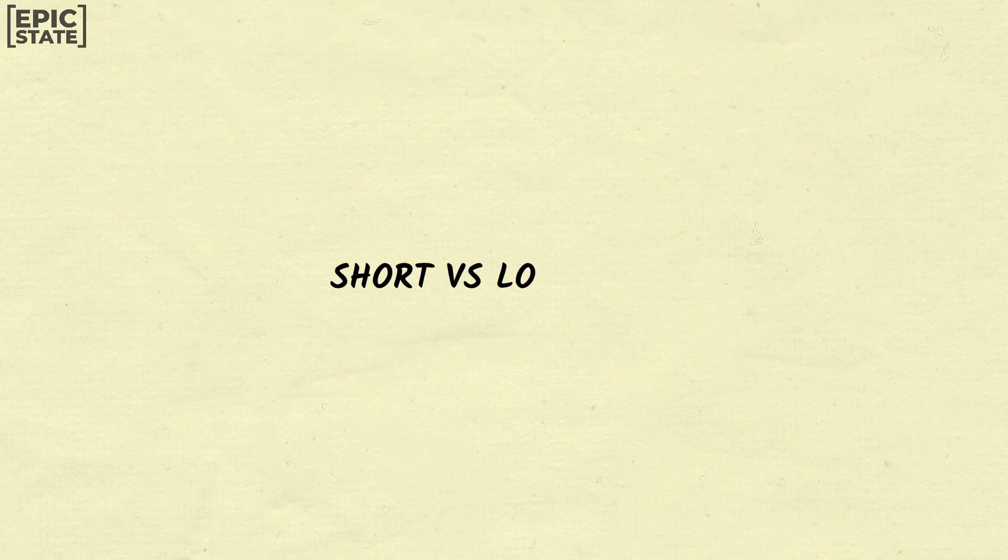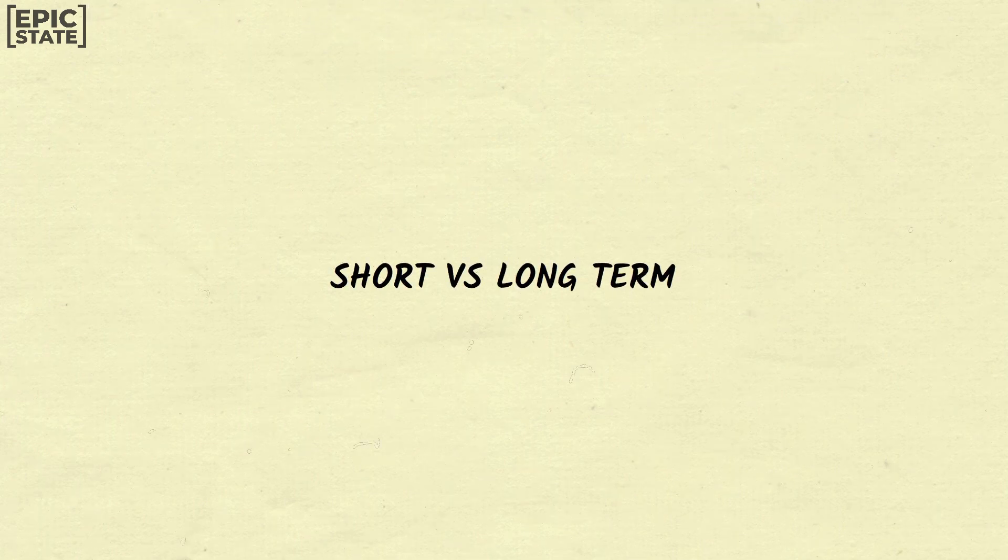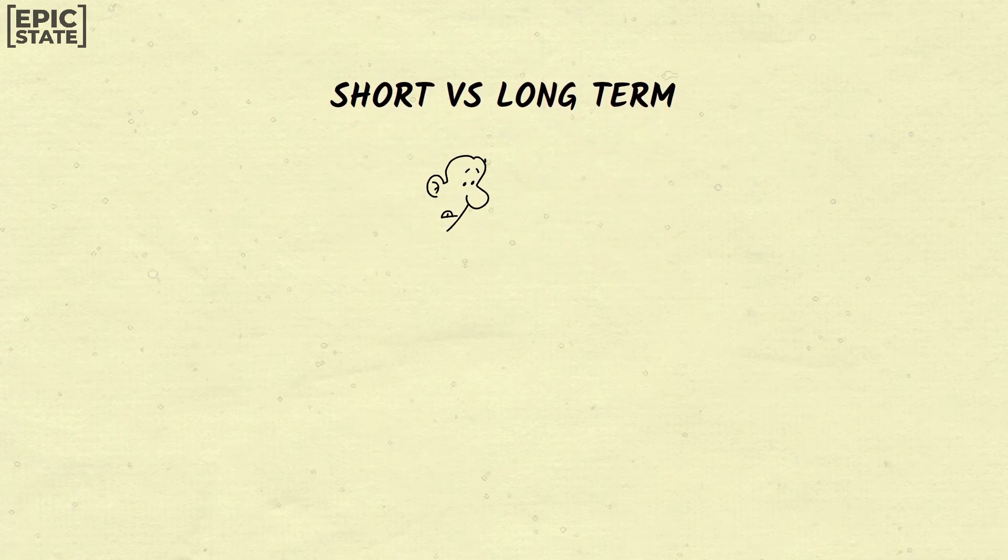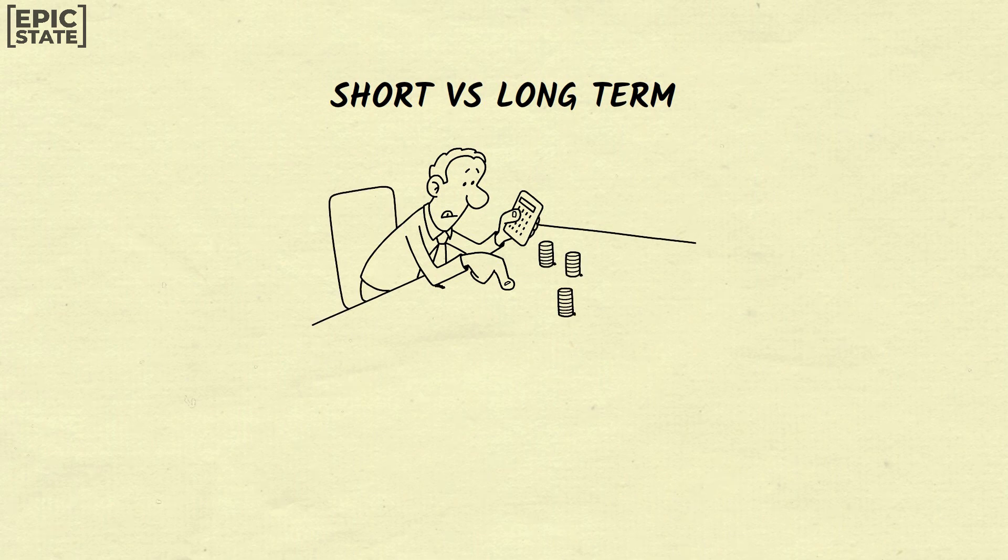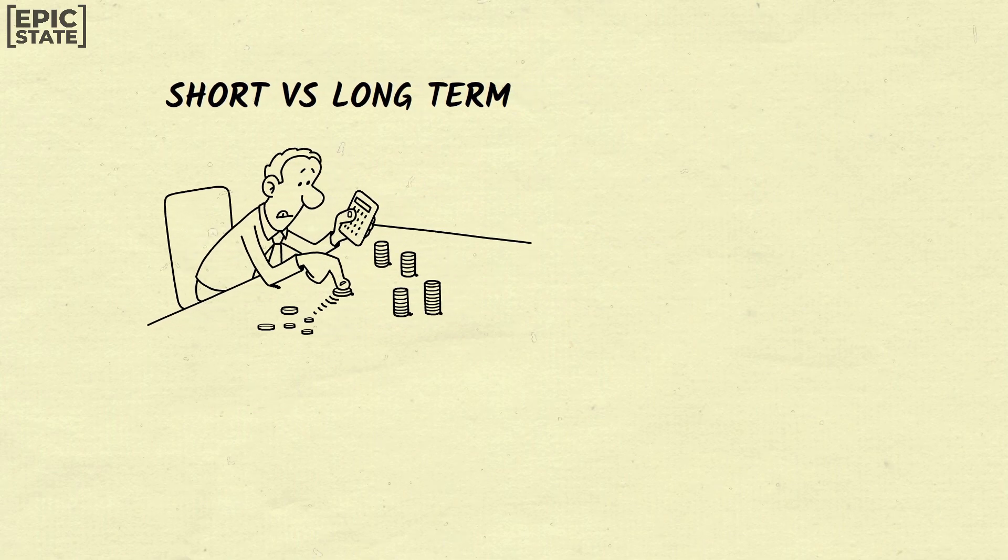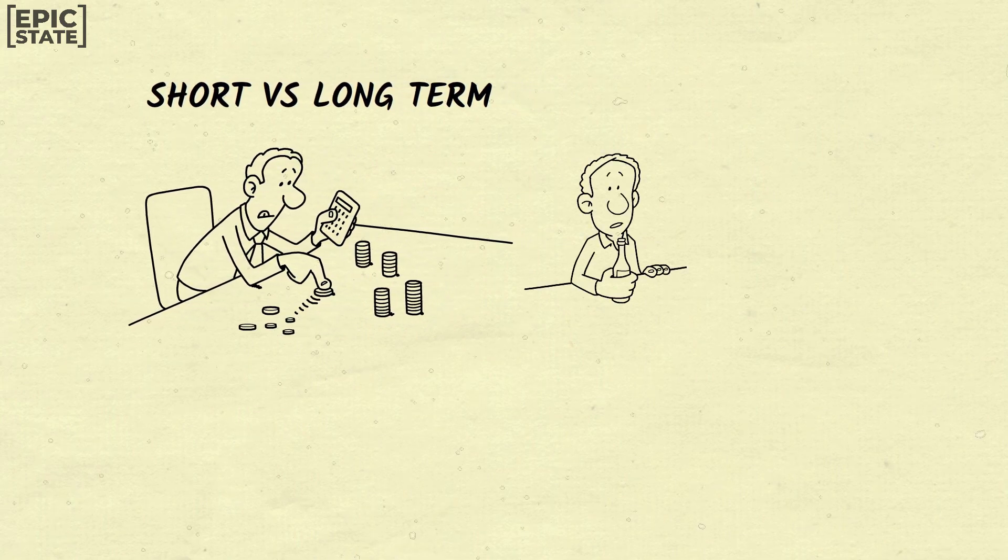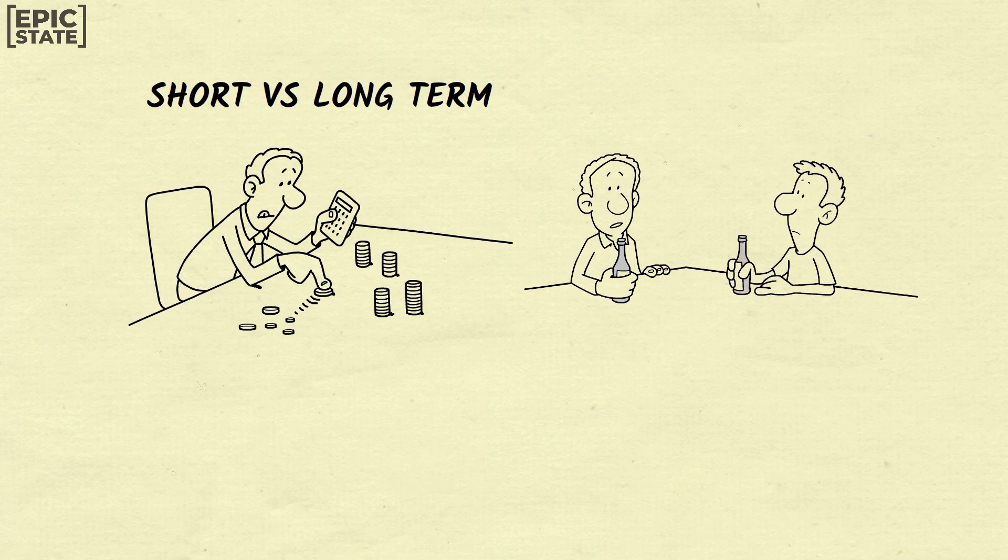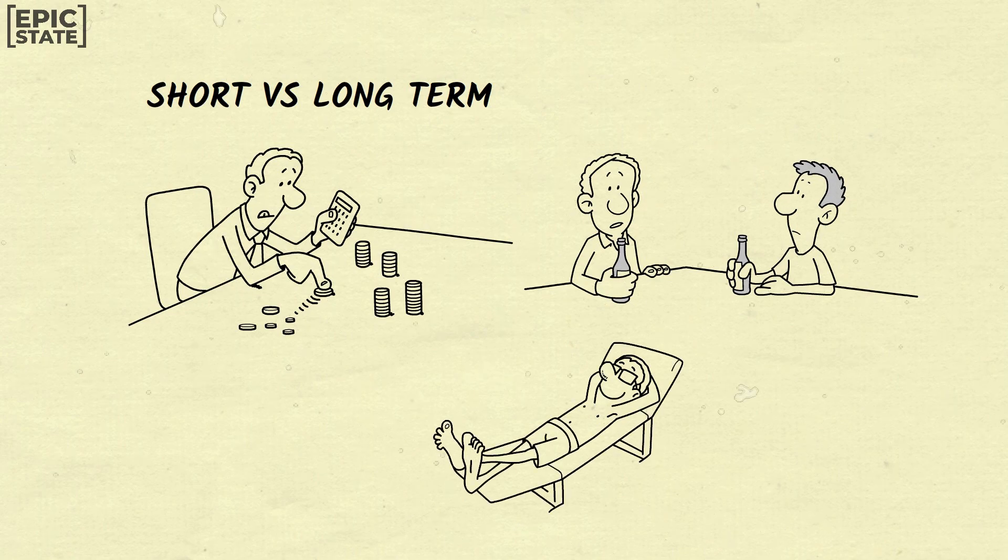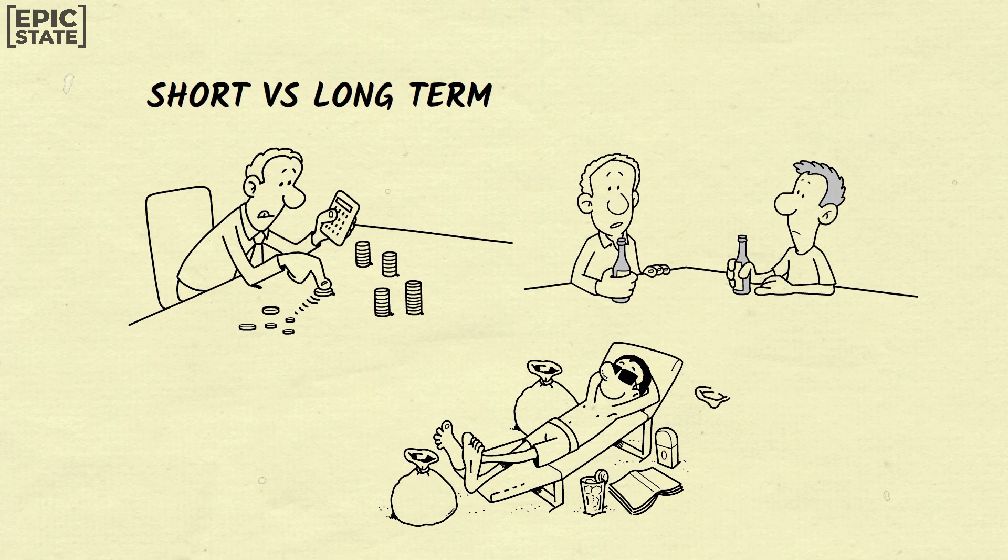Number nine: Poor people prioritize immediate needs over long-term goals, while rich people plan for the future. Poor people tend to focus on short-term needs and wants, such as paying bills or going out, rather than planning for the long-term. Wealthy individuals, on the other hand, understand the importance of planning for the future and prioritizing long-term goals, such as saving for retirement or investing in assets that will appreciate over time.